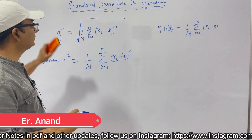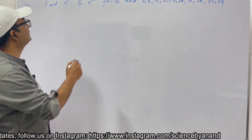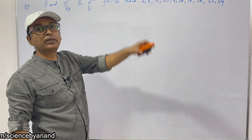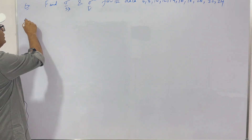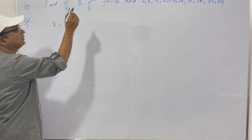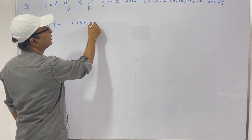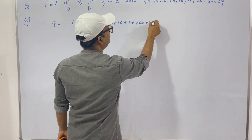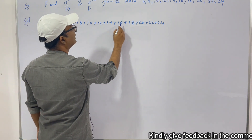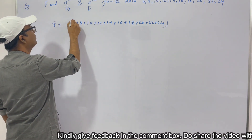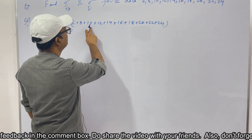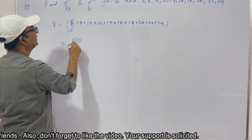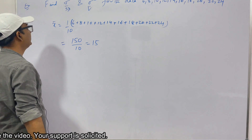Now let's take an example: find standard deviation and variance for the data 6, 8, 10, 12, 14, 16, 18, 20, 22, 24. First, let's find the mean: (6+8+10+12+14+16+18+20+22+24) / 10. The sum is 150, so mean = 150/10 = 15.